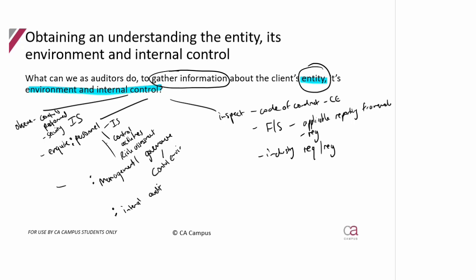What about understanding the strategy of the business? I can inquire with those charged with governance or management about the strategy and the performance management tools. For accounting policies, I can look at the financial statements again. As for whether it's a group or an individual entity, I can look at publicly available information about the company, the details of whether it's a group, and inspect specific documents.